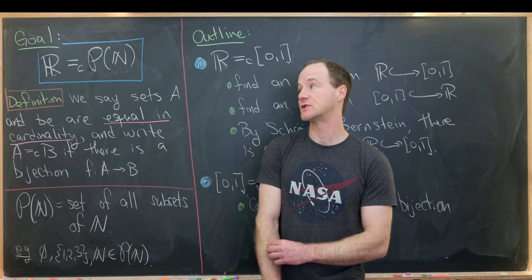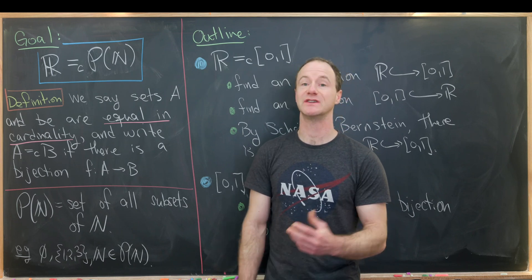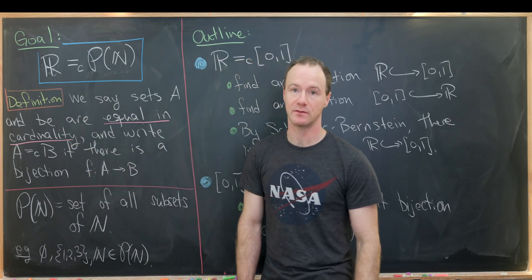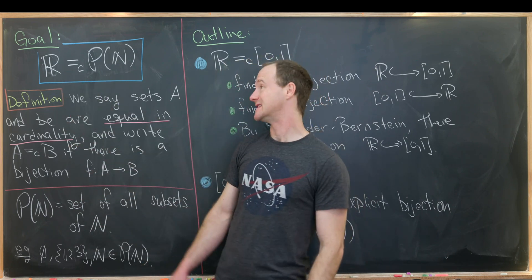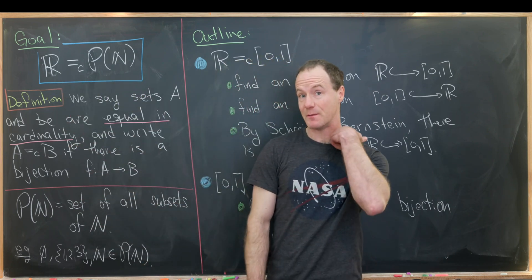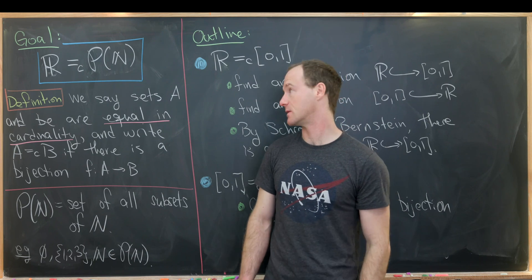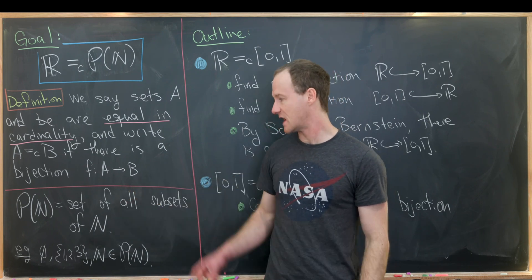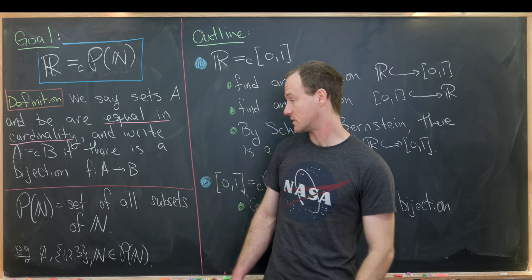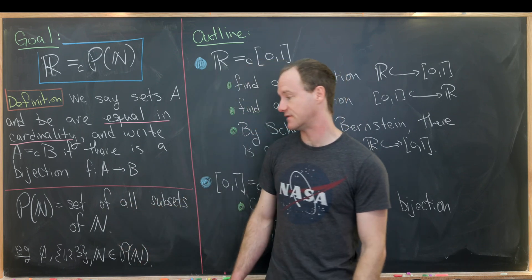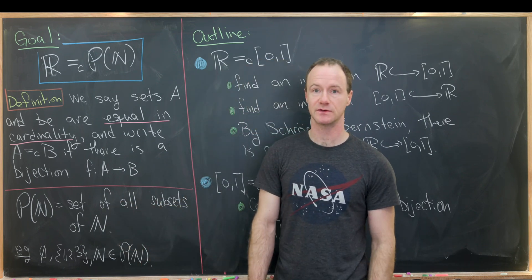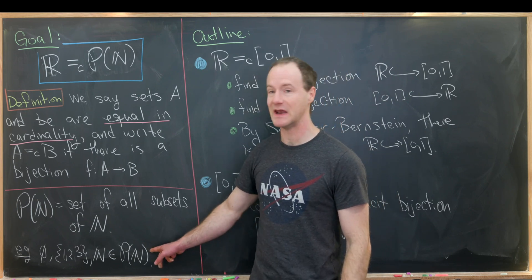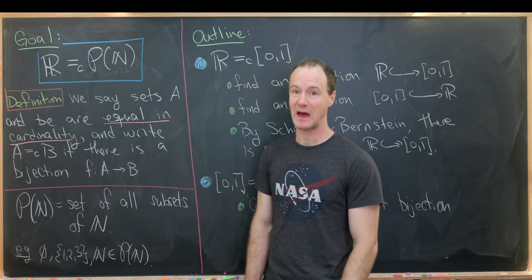Today I want to share one of my favorite results from elementary set theory: the cardinality of the real numbers is equal to the cardinality of the power set of the natural numbers. The power set of the natural numbers is the set of all subsets of the natural numbers, so if you can think of a subset of the natural numbers, that will be an element of the power set.